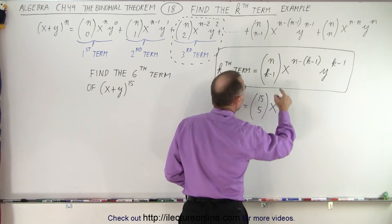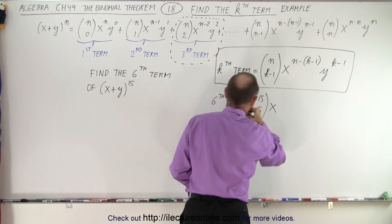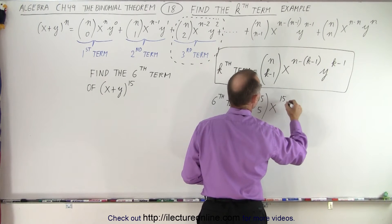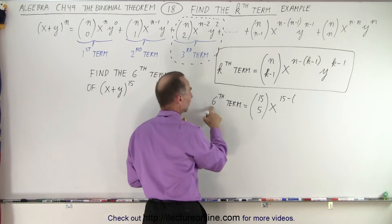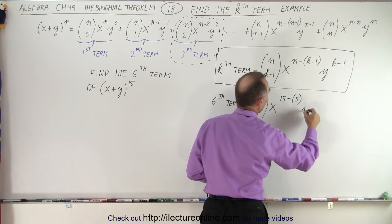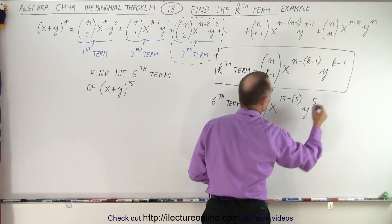And here we have x to the n minus k minus 1. So n is 15. I might as well just write the numbers down. 15 minus k minus 1. So if k is 6, k minus 1 would be 5, so 15 minus 5. And here we have y to the k minus 1, which is to the fifth power.